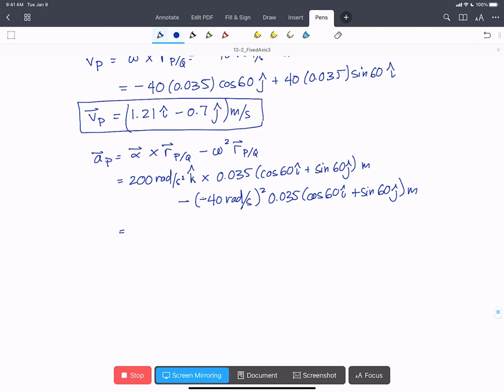So we're going to do out that first cross product. We're going to find that this is 200 times 0.035 times cos 60 in the J hat. So K cross I is J, minus 200 times 0.035 times sine 60 in the I hat. So K cross J is minus I.